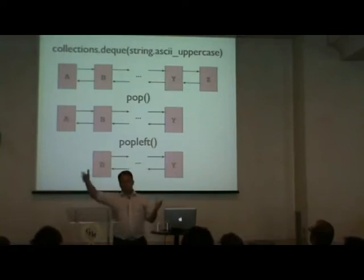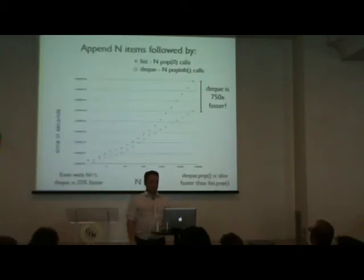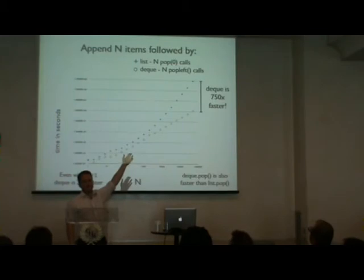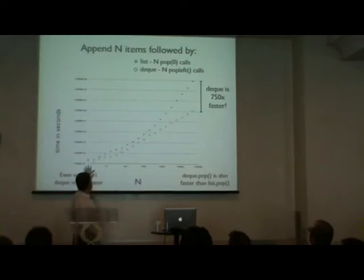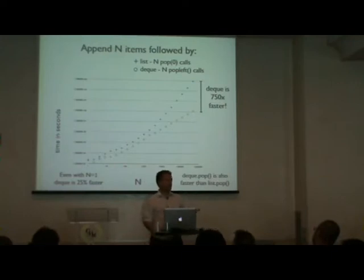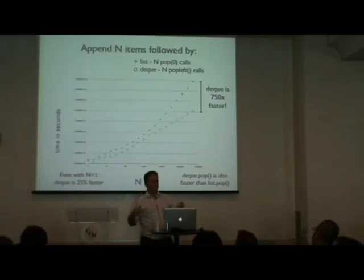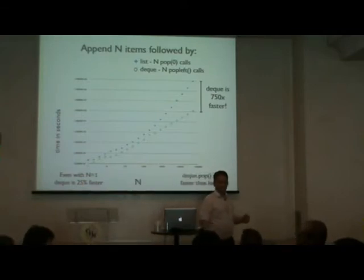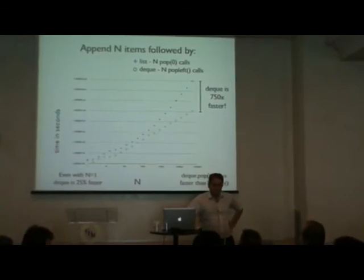You initialize a deque from any iterable. For example, I initialize it to uppercase letters A through Z. Calling pop() gets Z — it just cuts the two end pointers and updates the structure. Calling popleft() removes the A from the beginning. The performance graph shows that with a million items, a deque is about 750 times faster than a list for popping from the front. Even with one or two items, a deque is about 25% faster than a list.